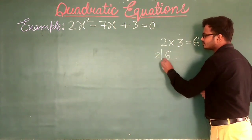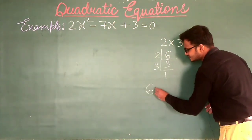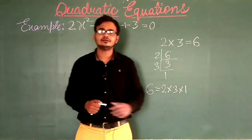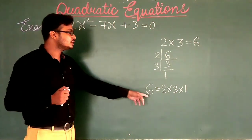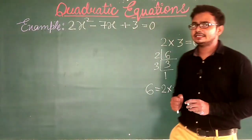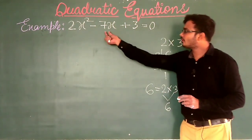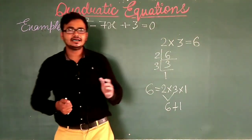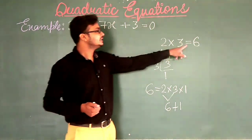Then the second step: multiply the coefficient of X square into the constant. The coefficient of X square is 2, multiply this with 3 to get 6. Now factorize 6: 2 into 3, then 3 into 1. So these are the factors of 6 — 2, 3, and 1. Now arrange 2, 3, 1 to get 7, meaning the coefficient of X. If we take 6 and 1: 6 plus 1 gives 7, and 6 multiplied by 1 gives 6.